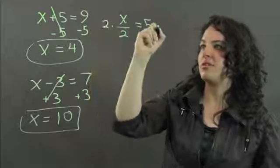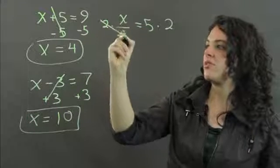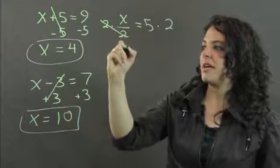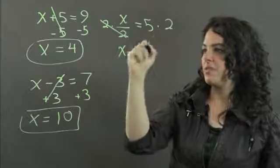Multiply by 2. 2 over 2 crosses out, and I have x equals 5 times 2 is 10.